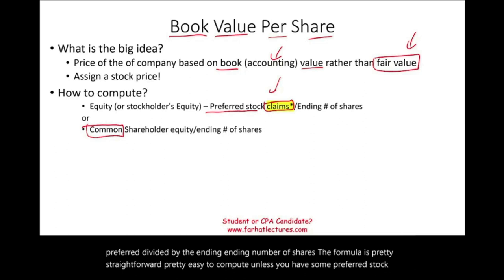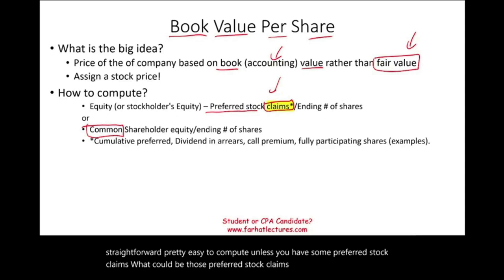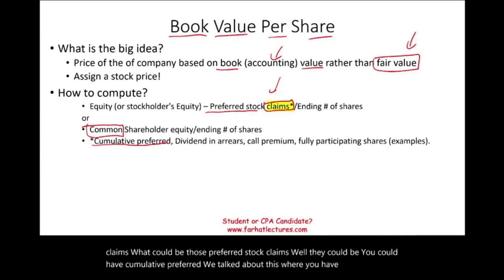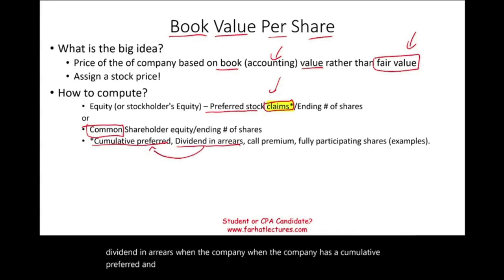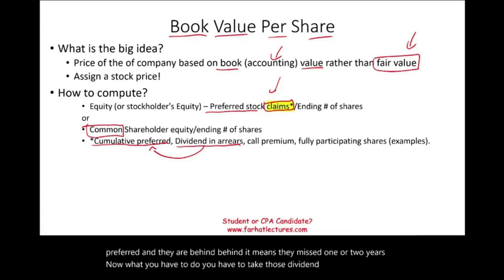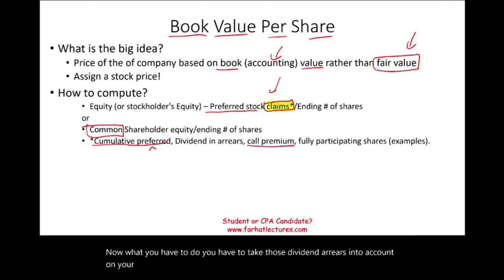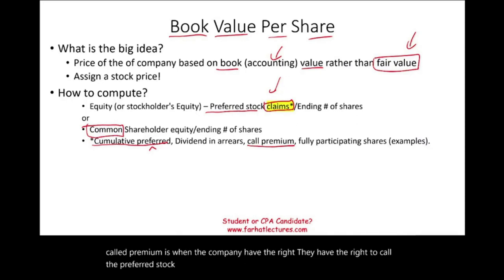What could be those preferred stock claims? You could have cumulative preferred — we talked about this — where you have to take into account every year the dividend regardless of whether they declare it or not, just like computing earnings per share. You could have dividends in arrears when the company has a cumulative preferred and they are behind — meaning they missed one or two years. You also have to take those dividends in arrears into account in your computation. Sometimes there's a call premium — when the company has the right to call the preferred stock, and usually they pay a premium, a price above that, which you have to account for.